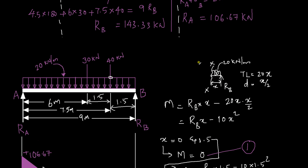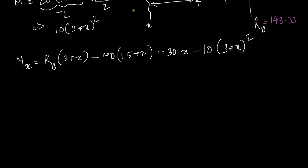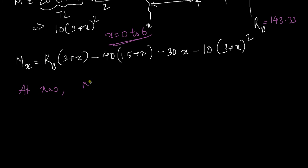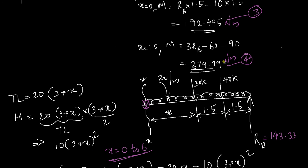Your x varies from this location to A, and the total distance is 6 meters. So the first point is x = 0 and the last point is x = 6. At x = 0, the moment will be 3RB minus 40 times 1.5 — that term with 30x becomes 0 — and the UDL term becomes 10 times 3 squared which is 90. So the moment equation at x = 0 gives 3RB minus 60 minus 90.